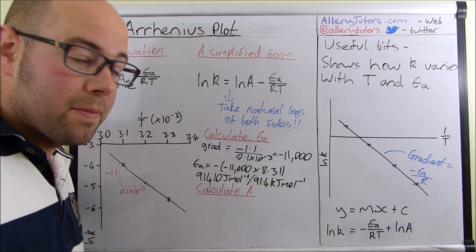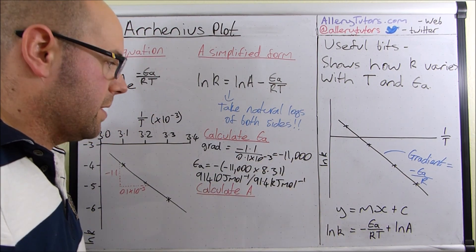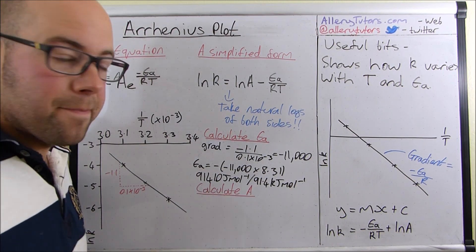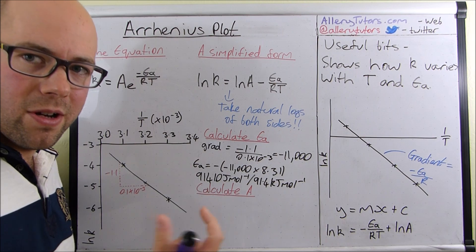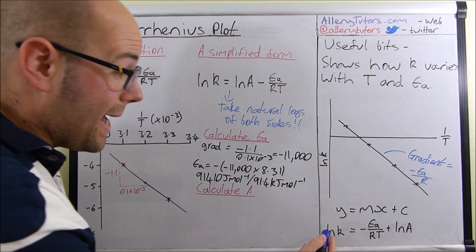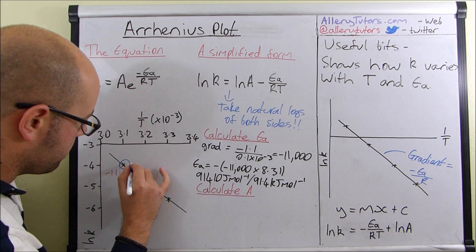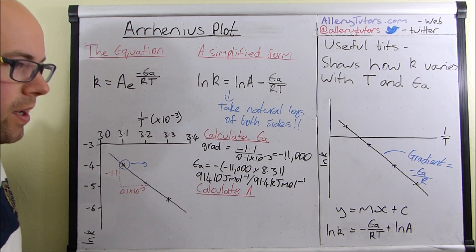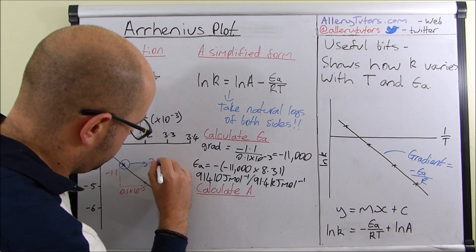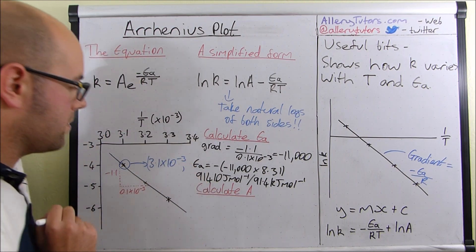It's relatively straightforward — you've got to be able to rearrange your equation, which can be a little bit tricky, but it's always R times the gradient, so it's always that method. Now we'll push it a little further and calculate A, the Arrhenius constant. We're going to pick a point on the graph to make it easier — let's pick this one: 3.1 times 10 to the minus 3 on the x-axis against minus 4 on the y-axis.